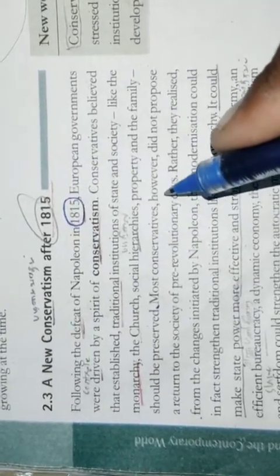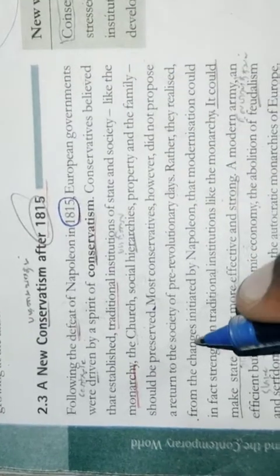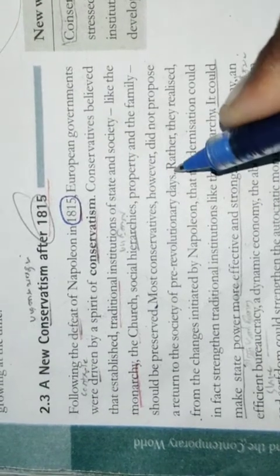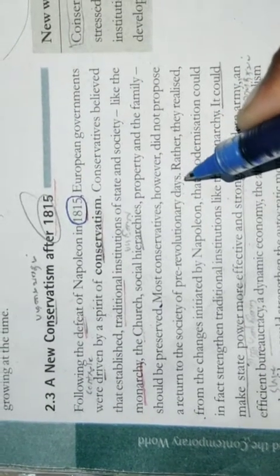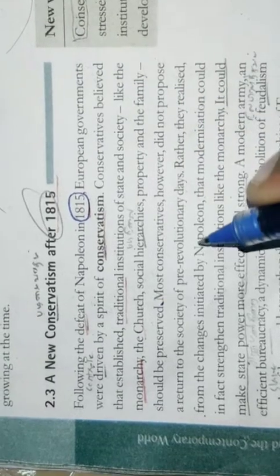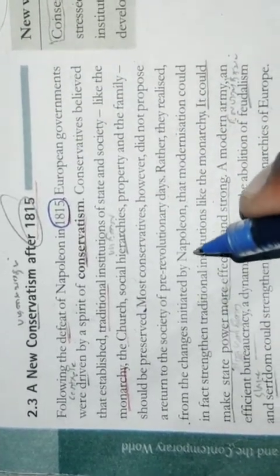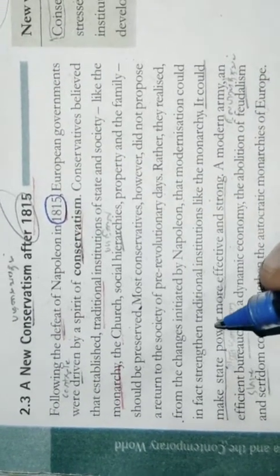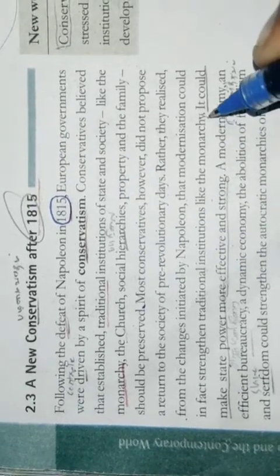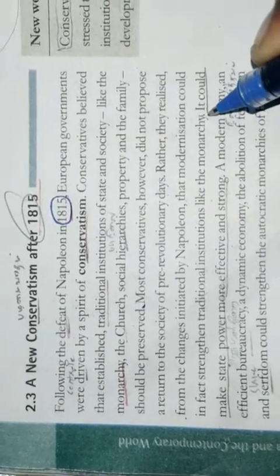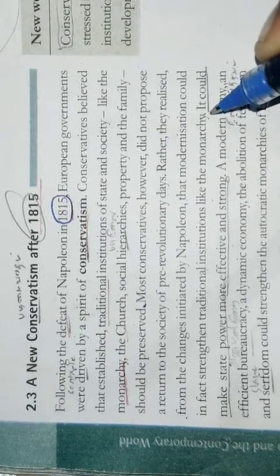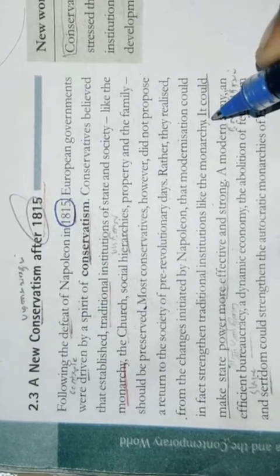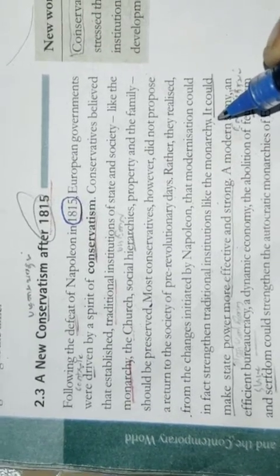The memory of the French Revolution nonetheless continued to inspire liberals. One of the major issues taken up by liberal nationalists who criticized the new conservative order was freedom of the press. During the years following 1815, the fear of repression drove many liberal nationalists underground into secret societies.